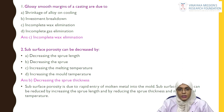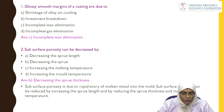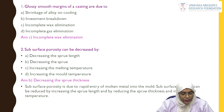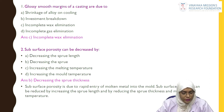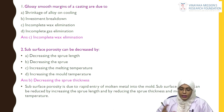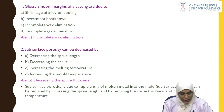Now let us see a few questions related to casting defects asked in PG entrance examinations. Glossy smooth margins of the casting are due to — shrinkage of alloy on cooling, investment breakdown, incomplete wax elimination, or incomplete gas elimination? The answer is incomplete wax elimination, because wax gives this glossy smooth appearance. Second: subsurface porosity can be decreased by decreasing sprue length, decreasing sprue thickness, increasing melting temperature, or increasing mold temperature? The answer is option B — decreasing the sprue thickness — along with increasing sprue length and reducing mold-metal temperature.